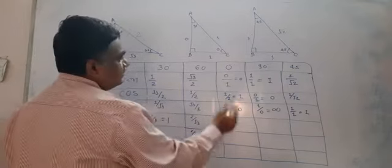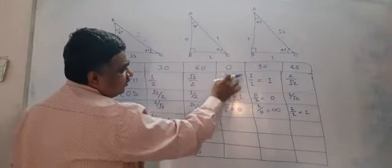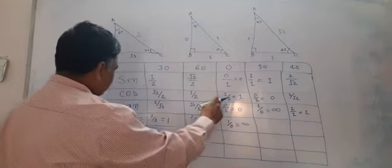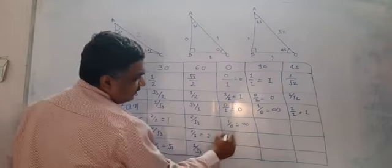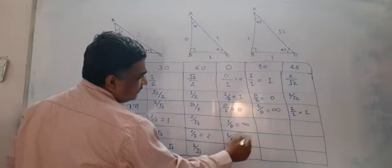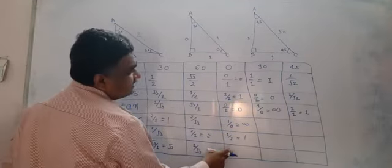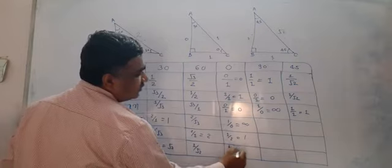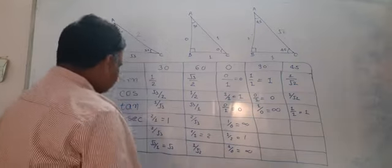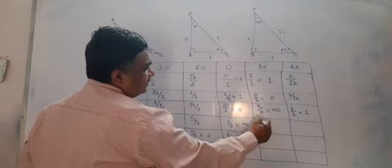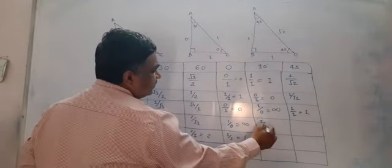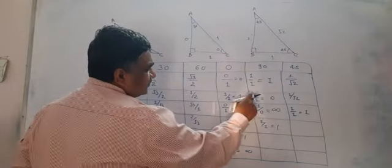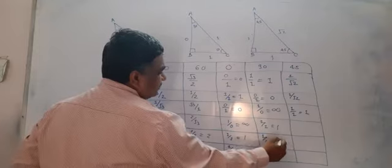For cosec 0, here it is 1 upon 1, which becomes 1. For cot 0, it is 0 upon 1, so 1 upon 0, which becomes infinite. For cosec 90, it is 1 upon 1, which becomes 1. Sec 90 gives 1 upon 0, which becomes infinite.